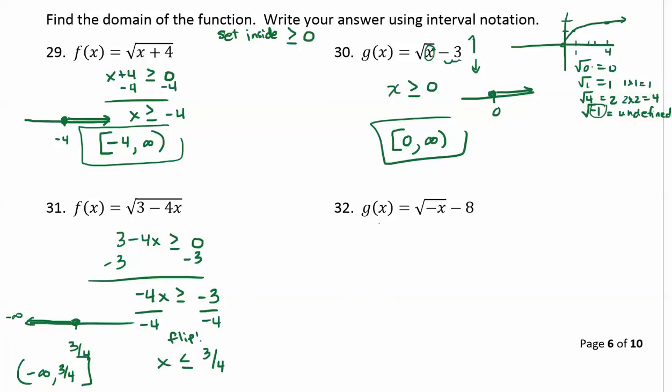For our final example we have g of x is equal to the square root of negative x minus 8. Again that minus 8 on the outside is a vertical movement and so it doesn't affect the domain at all. So we just focus on the radical and we set negative x greater or equal to 0.